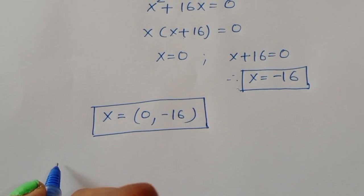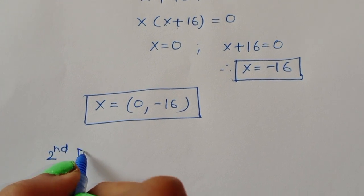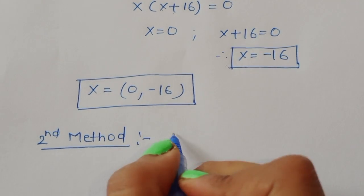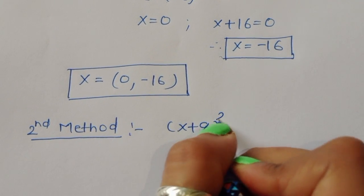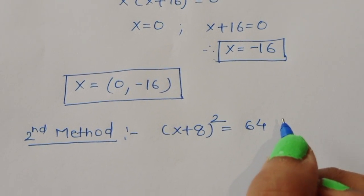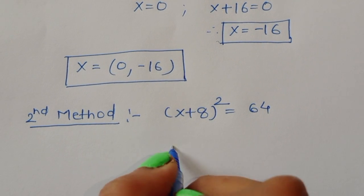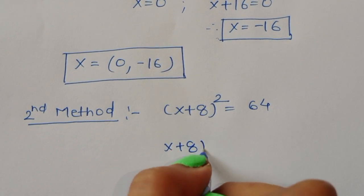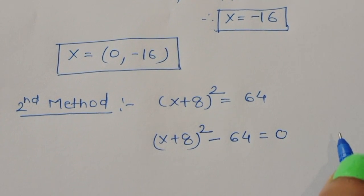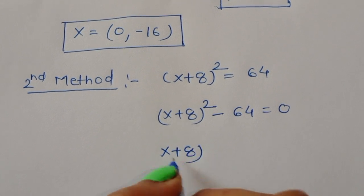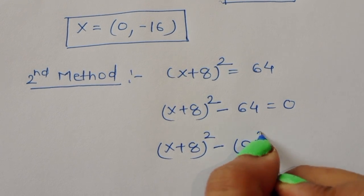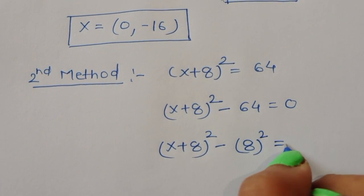Now we can solve this using a second method. The question is x plus 8 whole square is equal to 64. We rewrite it as x plus 8 whole square minus 64 equal to 0.